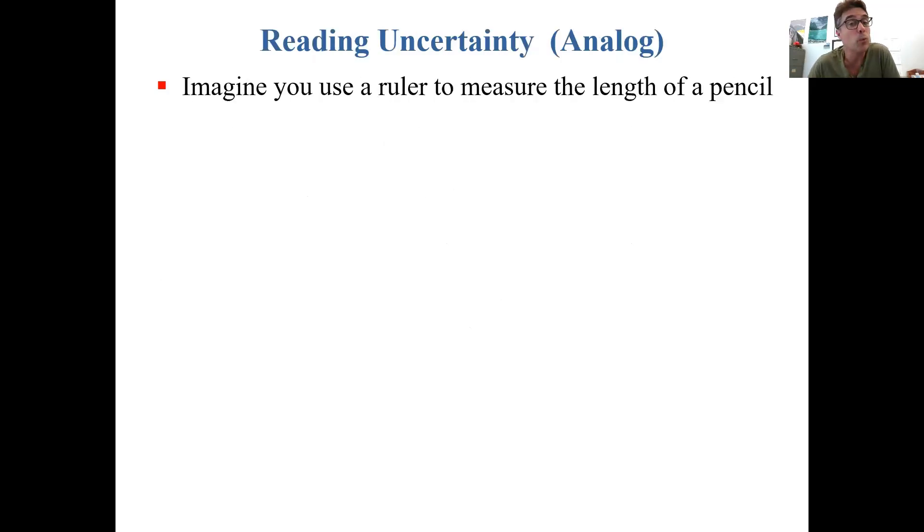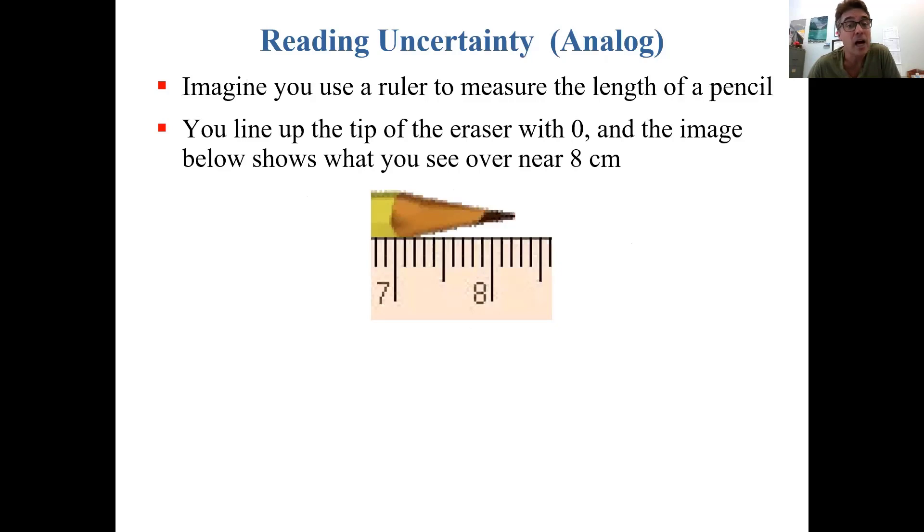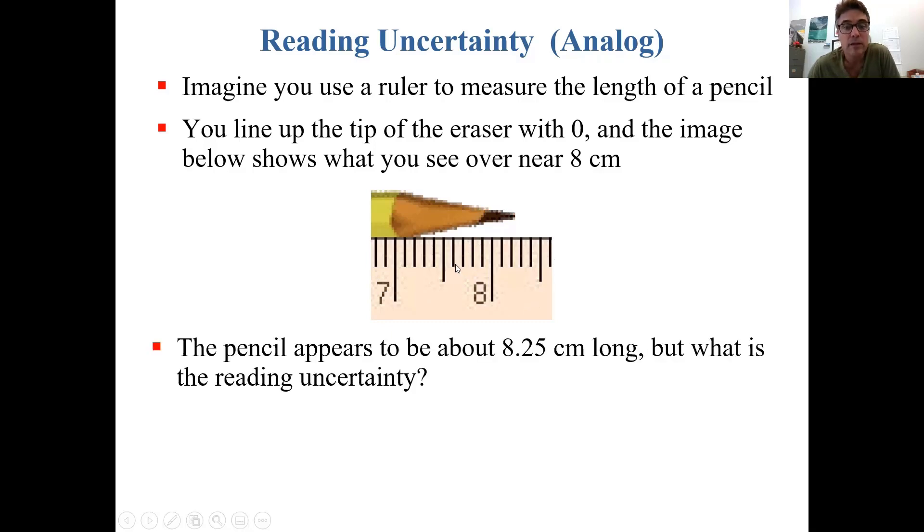There's also something called the reading uncertainty, and there are two kinds: analog and digital. Let's start with analog. Imagine you use a ruler to measure the length of a pencil. You line up the tip of the eraser with zero, and here's an image below showing you what you see at the other end of the pencil, which is up near eight centimeters. So how long is the pencil? It's more than eight but less than nine. It looks to be somewhere around maybe 8.25. But what is the reading uncertainty?